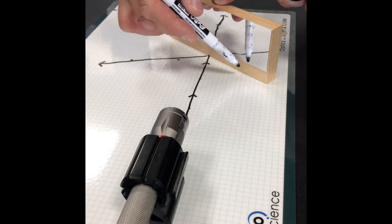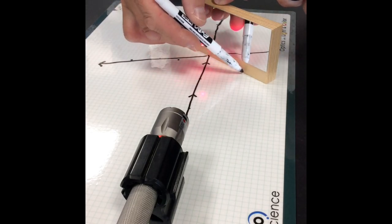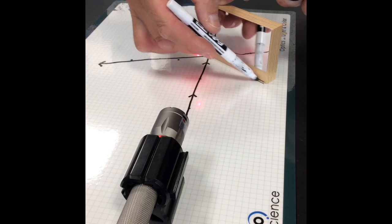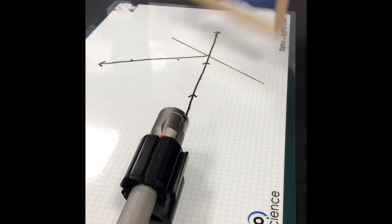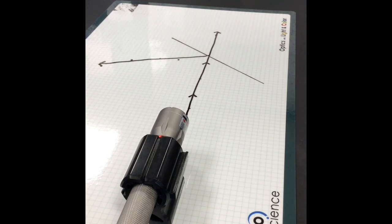So we are going to take our expo marker and we can either put some dots or we can just draw the front of that mirror. And then you can take the mirror off and take a look at the incoming and outgoing rays.